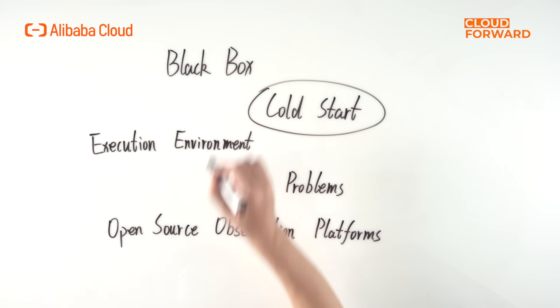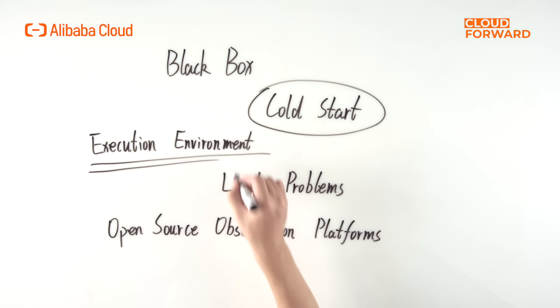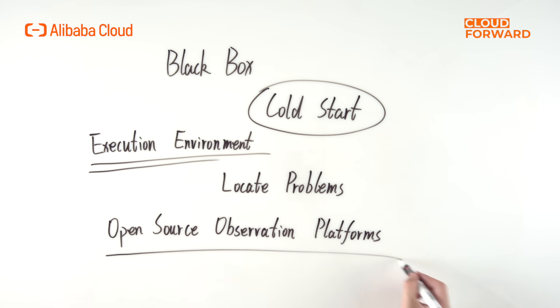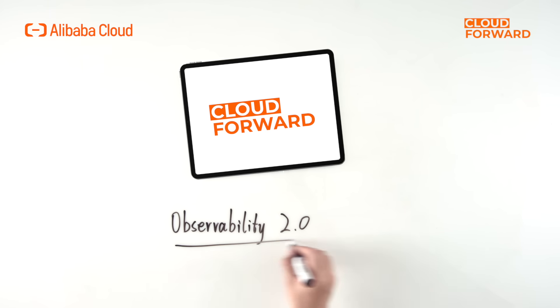As more and more scenarios are applied in serverless, the scale of use is increasing and the product architecture is becoming more complex. This nearly black box execution environment brings developers a strong sense of distance and distrust. Developers need to have control over their applications — they want to know how each request goes through function compute, check if end-to-end latency is due to cold start, view the execution environment of function instances, locate problems in case of request exceptions, and reuse familiar open-source observation platforms. In this context, Alibaba Cloud Function Compute launched Observability 2.0.